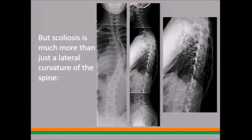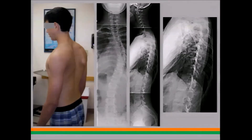Even though the definition of scoliosis is a curve visible on a front-view x-ray, scoliosis is really much more than that. Looking at the side view x-ray of a normal spine, there are normal curves. But in the thoracic spine of a scoliosis patient, you see it's very straight — maybe 10 degrees of curve where there should be 20 to 40 degrees. Most patients with idiopathic scoliosis have less than normal kyphosis — a straighter spine than normal when viewed from the side.